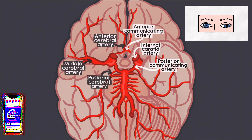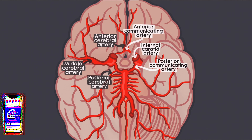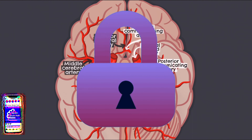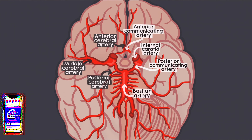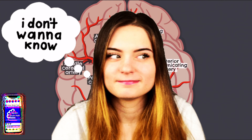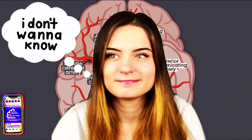Moving on to the large artery travelling down the front of the brain stem, we have the basilar artery. Due to the important brain stem structures supplied by this artery, occlusion can result in locked-in syndrome, which is characterised by complete paralysis, however with sparing of eye movements and normal functioning cognition.